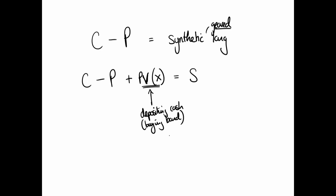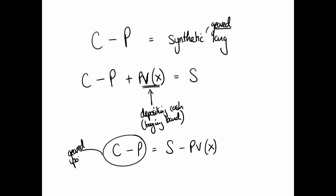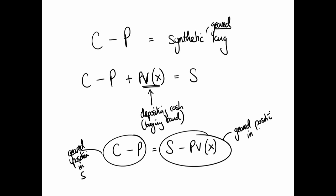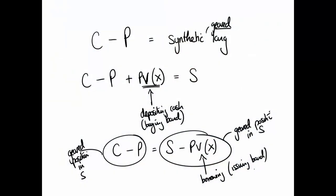Rearranging this equation: C minus P is a geared position in the underlying, and S minus the present value of X is also a geared position — the negative present value of X you can think of as a borrowing, like issuing a bond. This probably looks familiar because it is put-call parity: C minus P equals S minus the present value of X. We got there by looking at C minus P, recognizing it's geared, removing the gearing to get an ungeared position in the underlying, and rearranging. There's put-call parity.